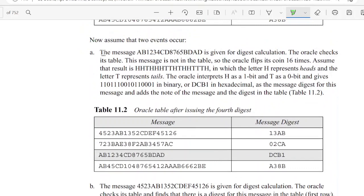Consider this message which is given for digest calculation. This is passed into the random oracle model. We use a fair coin to flip it and based on this, head is represented as 1-bit and tail is represented as 0-bit.